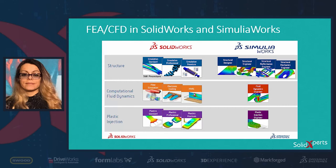For structural analysis in SolidWorks, we have four types of licenses: SolidWorks Premium, Simulation Standard, Simulation Professional, and Simulation Premium. In SolidWorks Premium, we have access to just two types of analysis — Static Analysis and Motion Analysis. But in Simulation Standard, we have Static, Motion, Fatigue, Strain Tracker, and some other features included in this license.